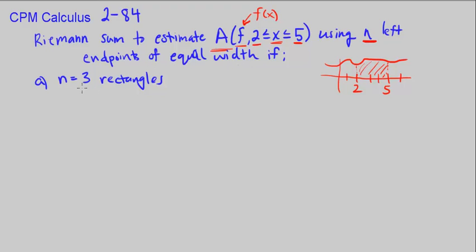So for part A, we're told: what if n is equal to 3, 3 rectangles? That means we're going to chop this area into 3 rectangles — here's one, here's one, here's one. So 3 rectangles.